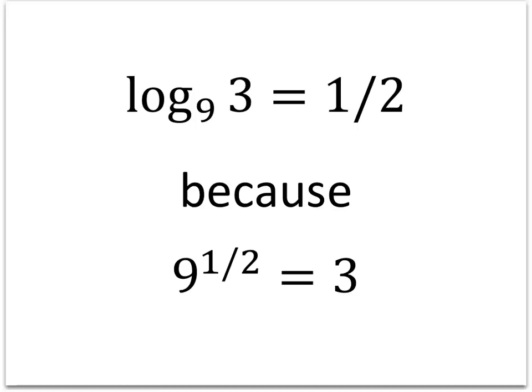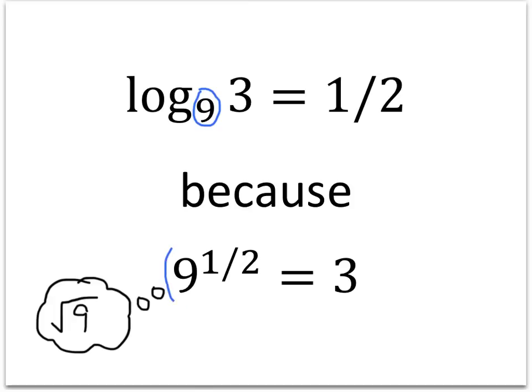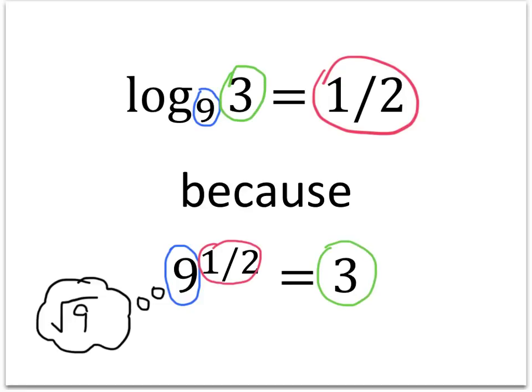What about the log base 9 of 3? That's 1 half because 9 to the 1 half equals 3. Remember that when we raise something to the 1 half power, what we really mean is the square root — so the square root of 9 equals 3. The base of the logarithm equals the base of the exponential expression, the value of the logarithm is the exponent, and the number inside the logarithm is the value of the exponential expression.